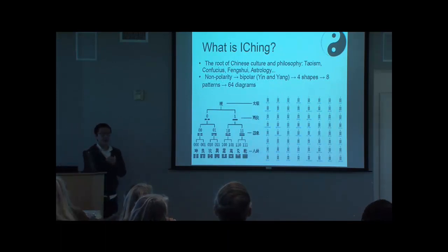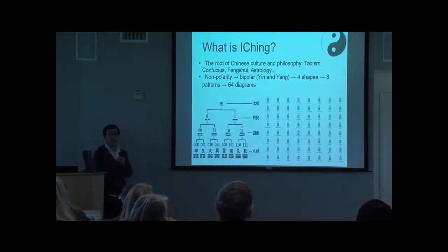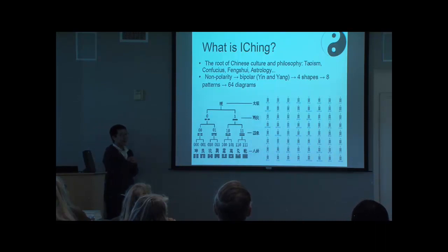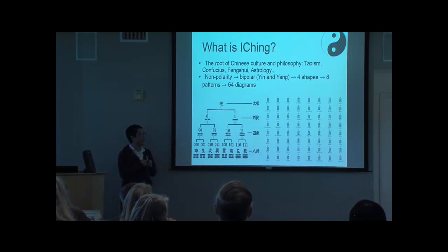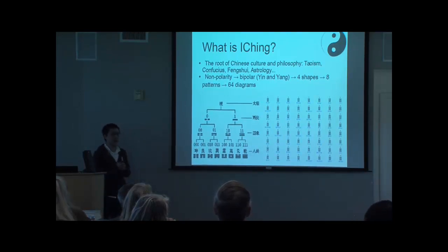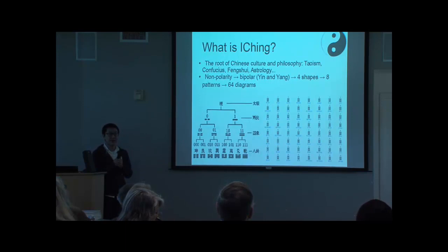If you haven't heard about I Ching before, you must have heard about Taoism, Confucius, Feng Shui, and astrology. What you may not know is that I Ching has had a very big influence on all these Chinese wisdoms. In I Ching, it categorizes everything starting from non-polarity, then subdivided into the bipolar, then into four shapes, then eight patterns, and finally 64 diagrams. These 64 diagrams can categorize all things in the world, each with different interpretations and semantics.